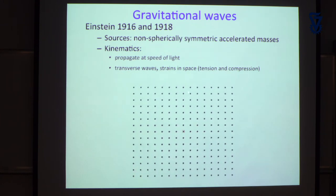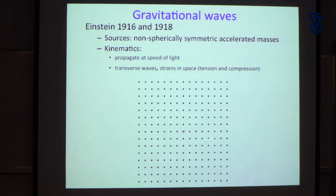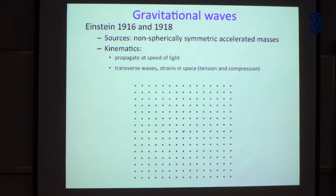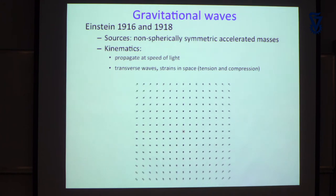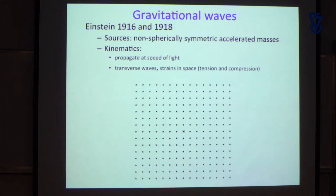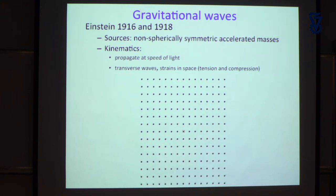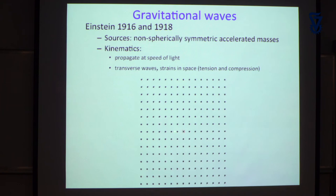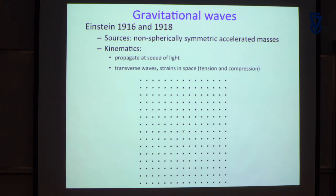You'll notice there is a contraction in one direction while there is an expansion in the other, and they keep flipping back and forth. That's an important property when you look at the design of any device that might want to detect a gravitational wave — you exploit that compression in one direction and expansion in the other.